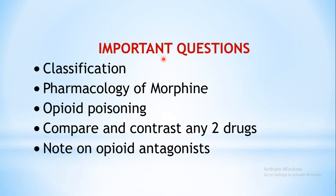This finishes the chapter. Important questions pertaining to this chapter include: classification of opioids as well as complex action opioids and antagonists - both are important. The pharmacology of morphine is very important from exam point of view and has appeared many times in exams. Morphine as well as opioid poisoning is also very important - you need to discuss symptoms and treatment including naloxone dose. Questions comparing and contrasting between drugs such as morphine and pethidine may also be asked. A note on opioid antagonists and endogenous opioid peptides may also be asked.